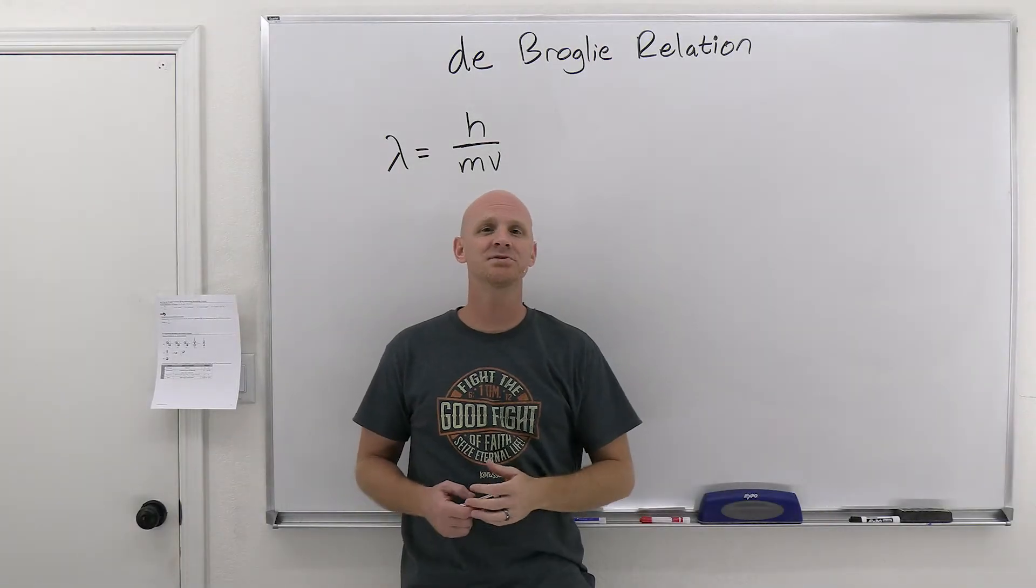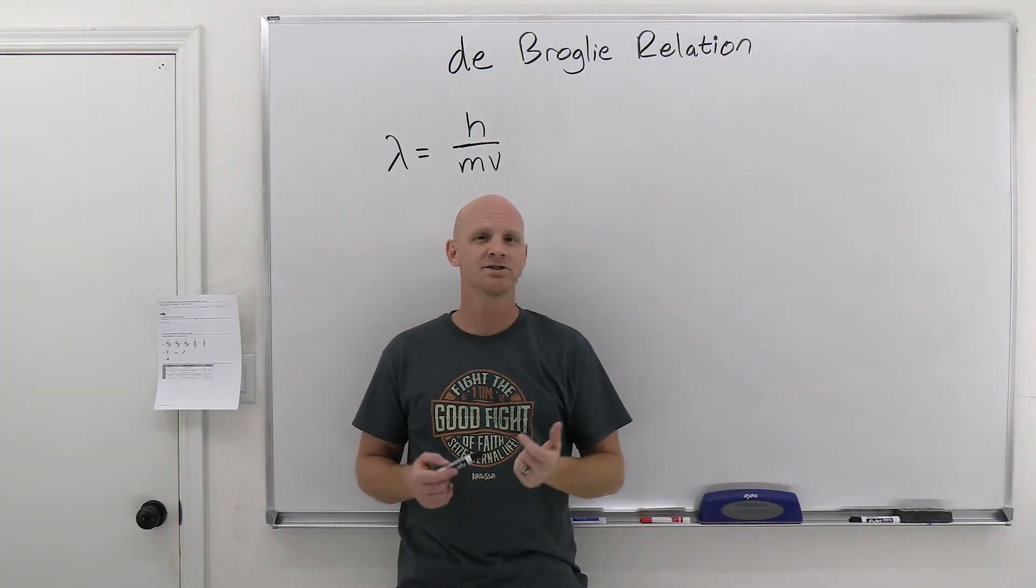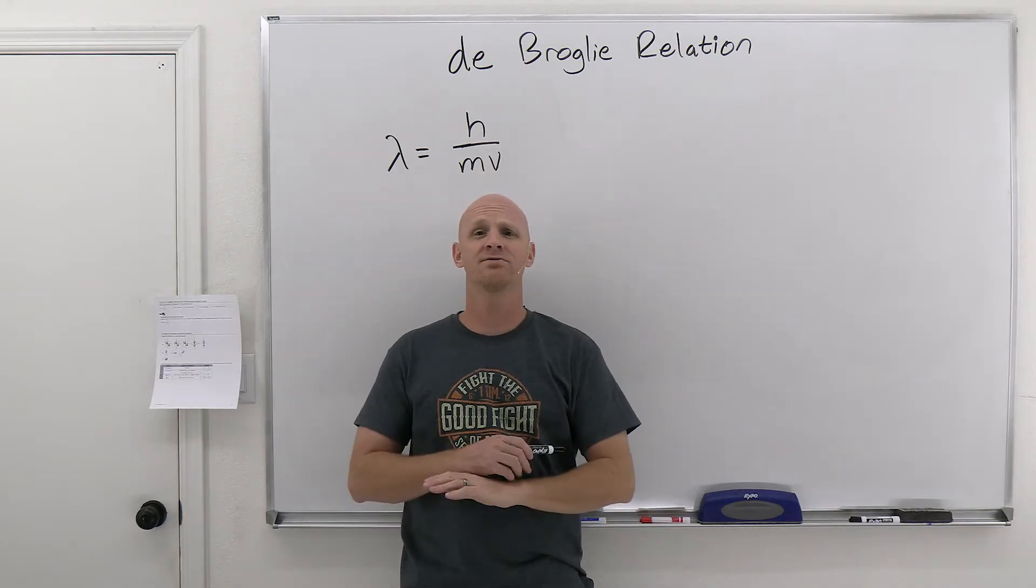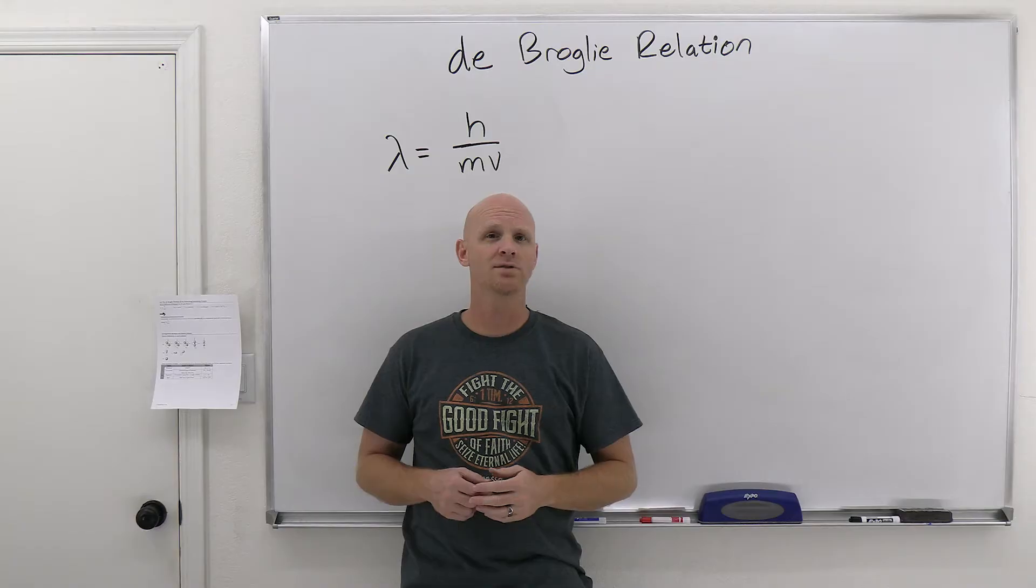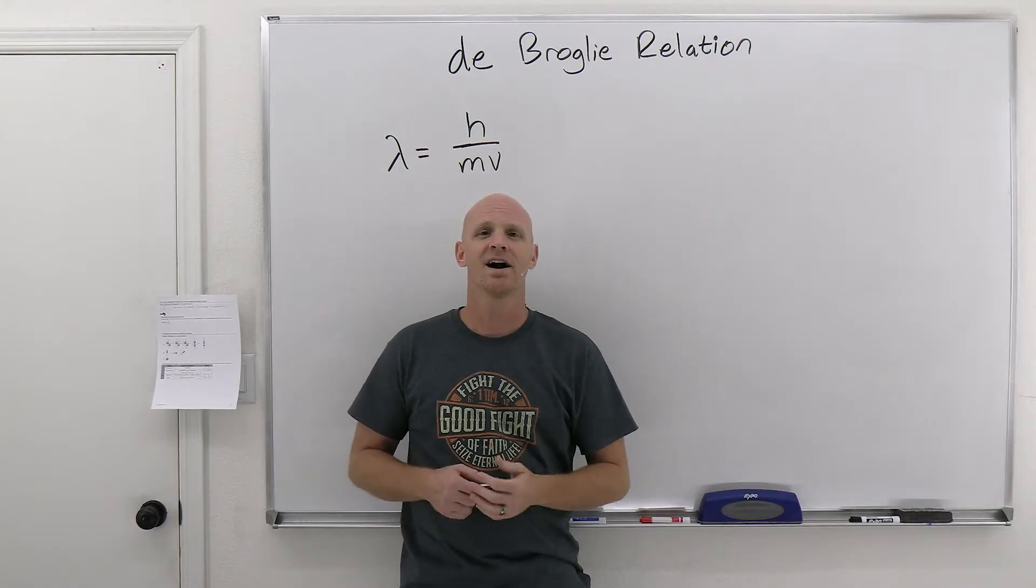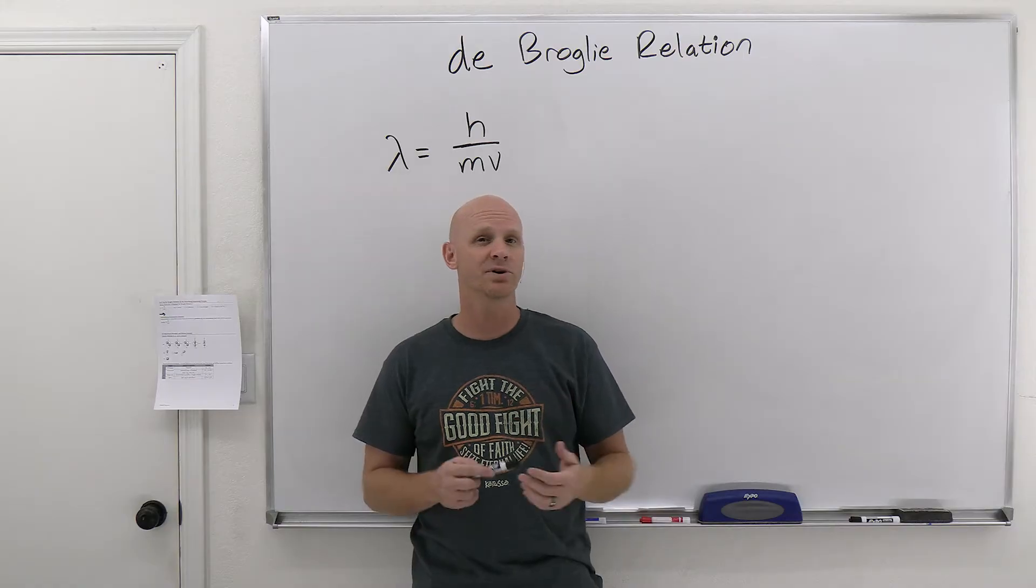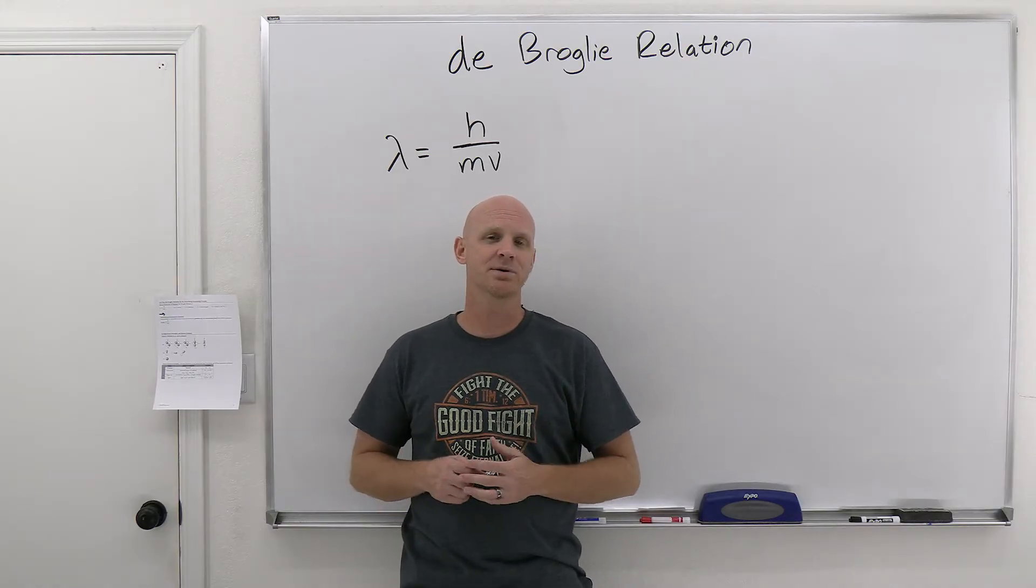The de Broglie Relation and the Heisenberg Uncertainty Principle are the two topics we cover in this brief lesson. We'll find out that de Broglie is my favorite person from all of chemistry history, and then we'll cover exactly what you need to know about the de Broglie Relation as well as the Heisenberg Uncertainty Principle for a typical general chemistry course.